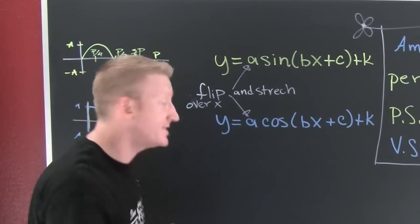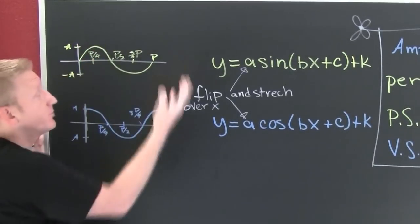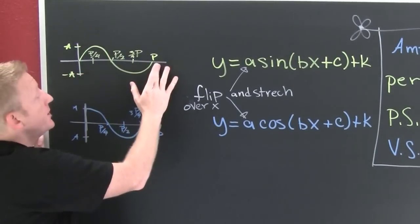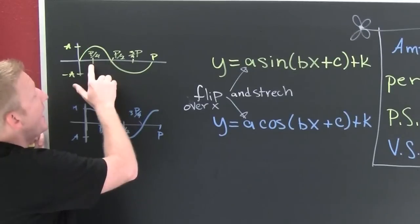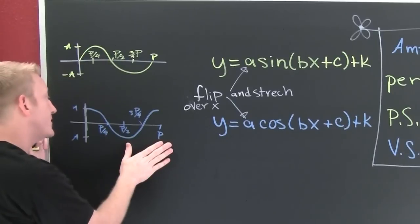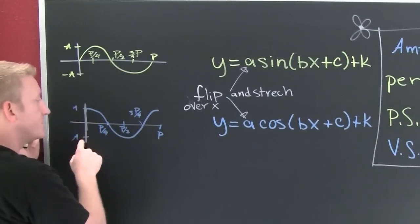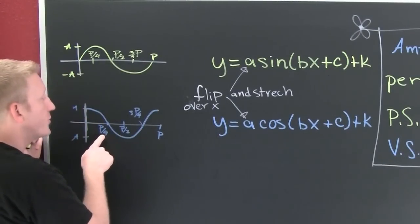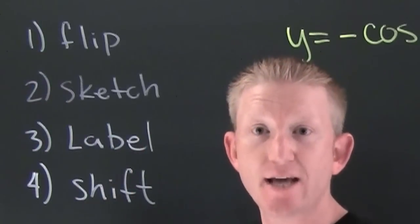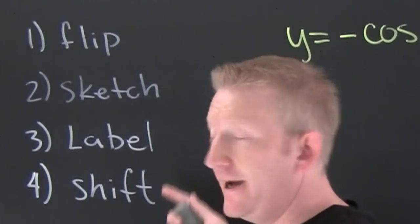When we're graphing these things, we're going to graph it, then label it. We're going to label these five things: the amplitude (our a), our period, half our period, half that, and then that one plus this one — three-fourths our period. On the cosine standard graph, it starts at positive a, and we label the same five things: amplitude, period, half our period, a fourth our period, and three-fourths our period. Graph trig functions: flip it, sketch it, label it, and shift it.